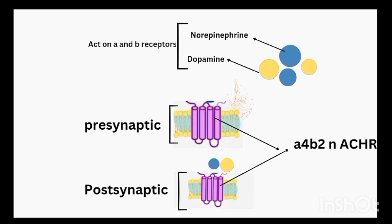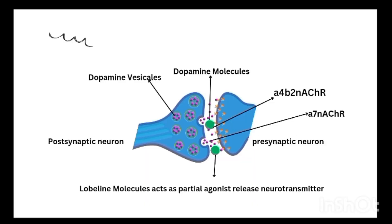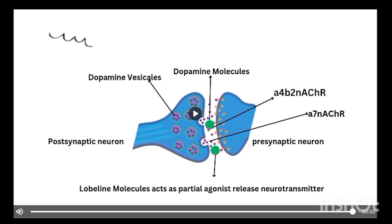In this animation we show two neurotransmitters — norepinephrine and dopamine — which act on alpha or beta receptors depending on conditions. The neurons have alpha-4 beta-2 nicotinic acetylcholine receptors. The green balls represent Lobeline and the pinkish-purple ones represent dopamine. Lobeline acts as a partial agonist at nicotinic acetylcholine receptors, stimulating presynaptic acetylcholine receptors, leading to moderate dopamine release — but not as strongly as nicotine.